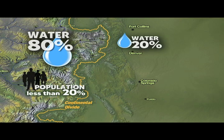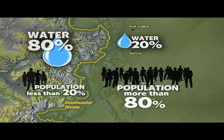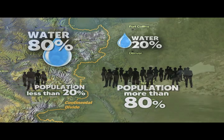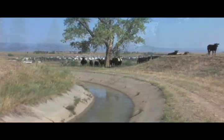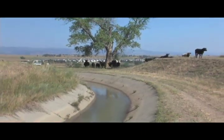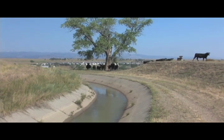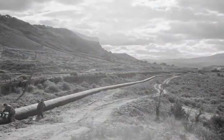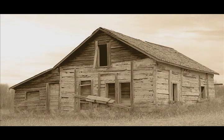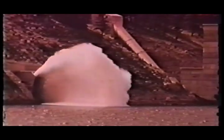The eastern slope receives only 20% of the state's precipitation but houses more than 80% of the population. Moving water from the western slope to the arid eastern slope is called trans-mountain or trans-basin diversion. Trans-mountain diversions were first constructed in the 1800s, but when Dust Bowl conditions hit in the 1920s and 30s, the quest for large trans-mountain diversions began in earnest, the biggest being the Colorado Big Thompson project.